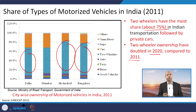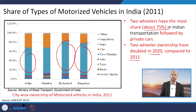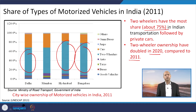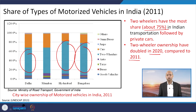Air pollutant emissions from tailpipes depend on the types of vehicles. If there are more two-wheelers, then NOx emissions are quite high, because two-wheelers emit significant levels of nitrogen oxides.